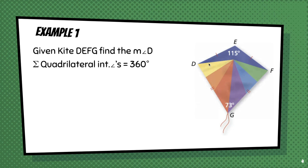They all add up to 360 degrees. We also know that angle D and angle F are congruent. And therefore, the measure of angle D is equal to the measure of angle F. So we could write an equation that the measure of angle D plus the measure of angle E plus the measure of angle F plus the measure of angle G equals 360 degrees.